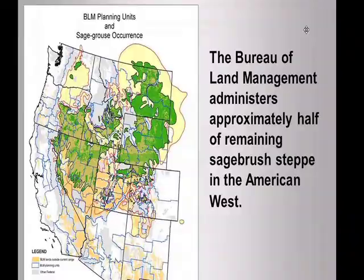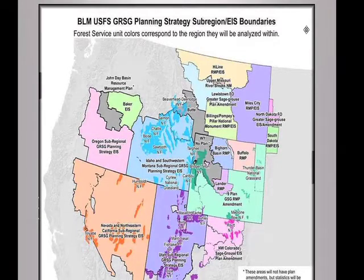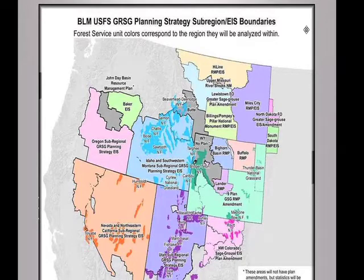The Fish and Wildlife Service's finding and listing schedule has spurred an unprecedented federal planning process for greater sage-grouse. Many federal and state agencies are involved, including the Bureau of Land Management, the U.S. Forest Service, the Fish and Wildlife Service through both their species listing and refuges divisions, the Natural Resources Conservation Service, and others. Our webinar will chiefly focus on the BLM and U.S. Forest Service planning process, though you should be aware that other agencies are also heavily involved in greater sage-grouse conservation planning.